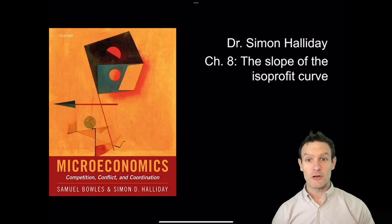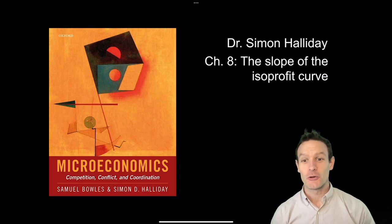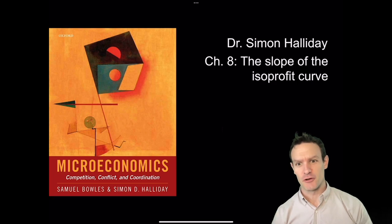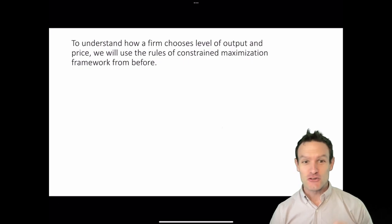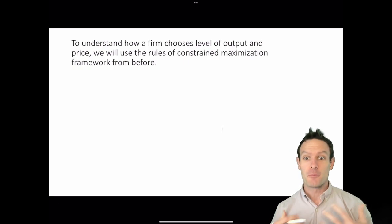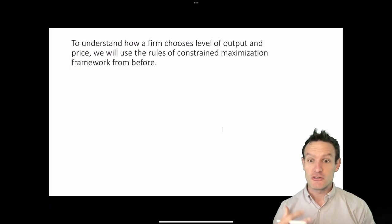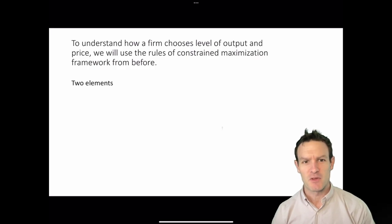Hello everyone. Here we're going to be talking about the slope of the isoprofit curve. In so doing, we're going to be talking about the objectives of firms and what constrains firms in being able to maximize their profits. Thinking about this process of profit maximization, we're going to return to this concept of constrained maximization that we've used previously.